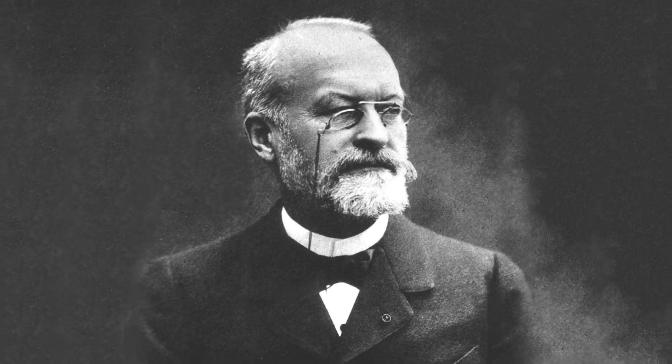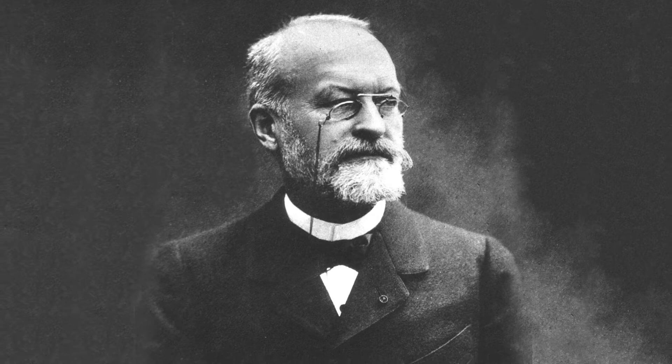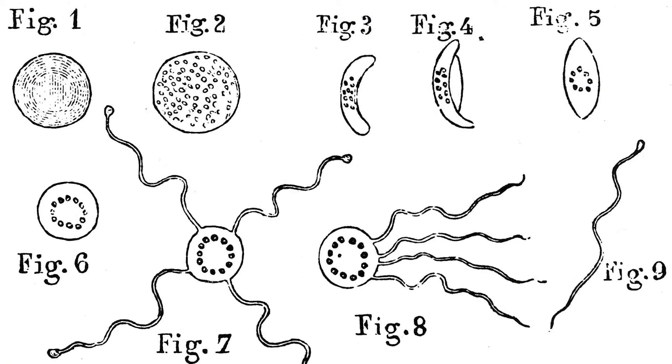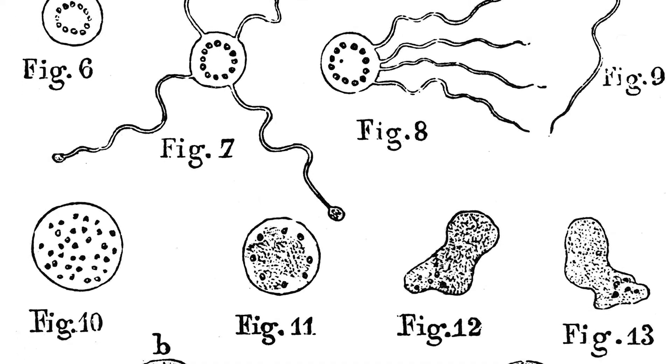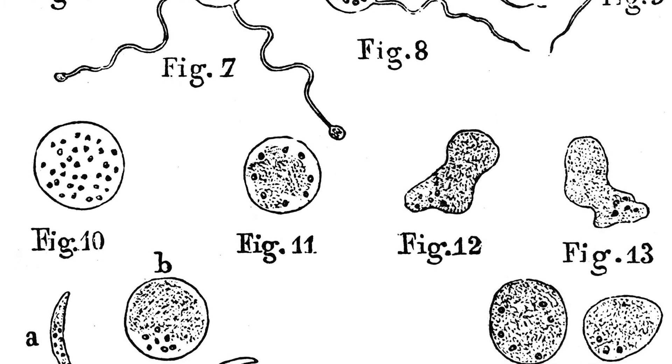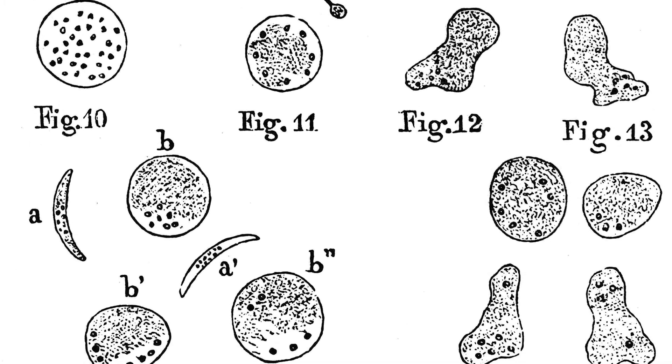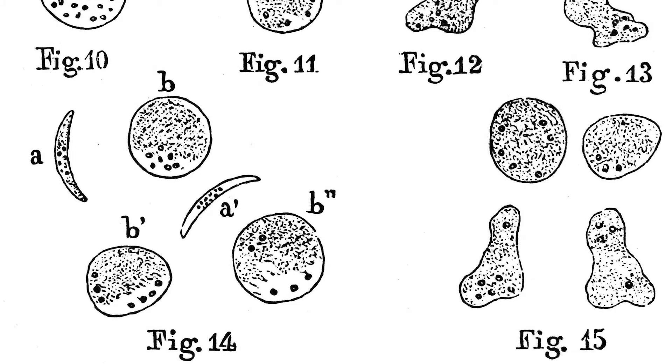Here you have Alphonse Laveran. He was a French military surgeon, and he won the Nobel Prize for first recognizing that malaria parasites could be identified in the blood of patients who were suffering from fevers. And what he observed, he drew. These are drawings of the shapes of the parasites that he observed in the patient's blood using a microscope.